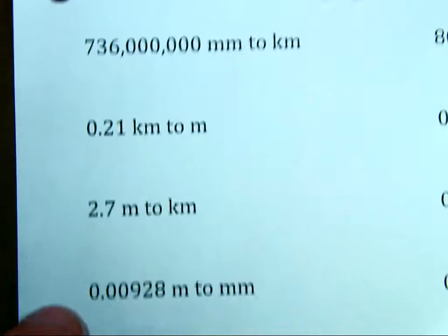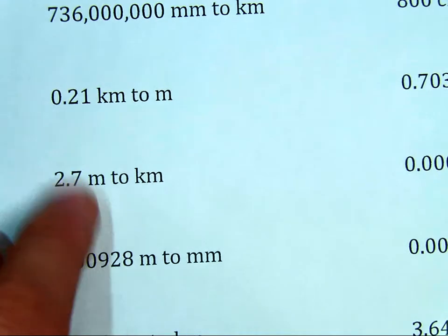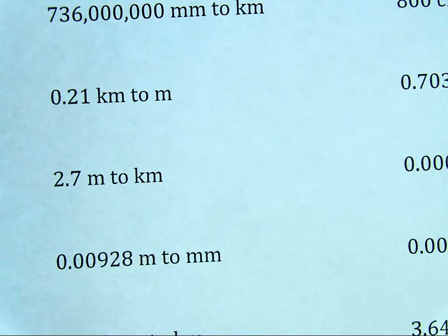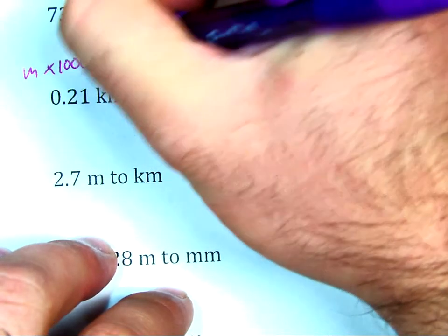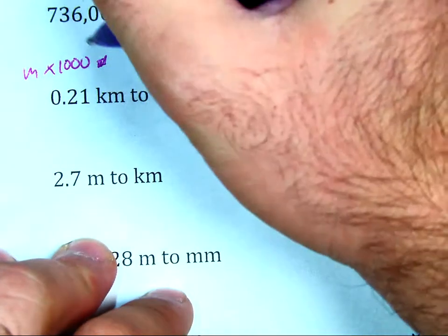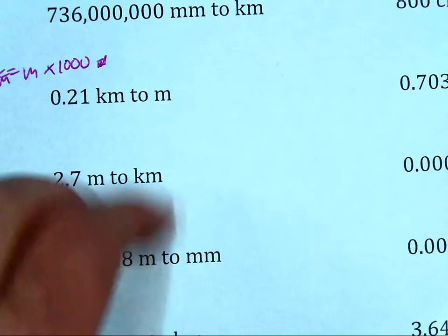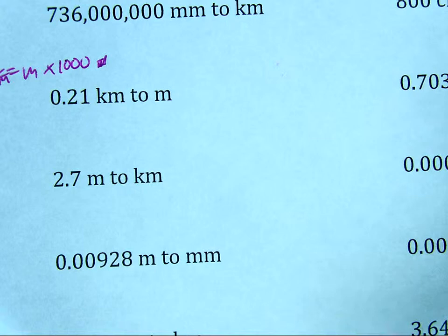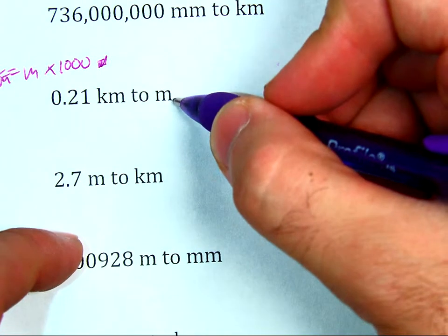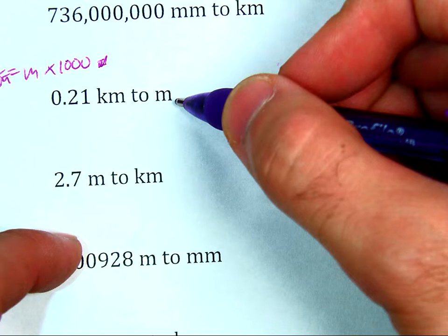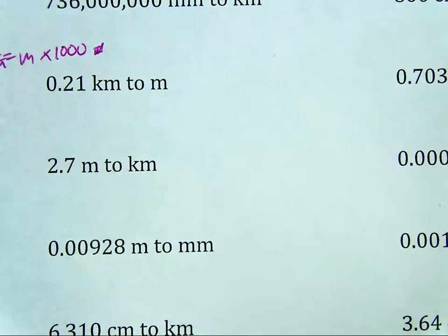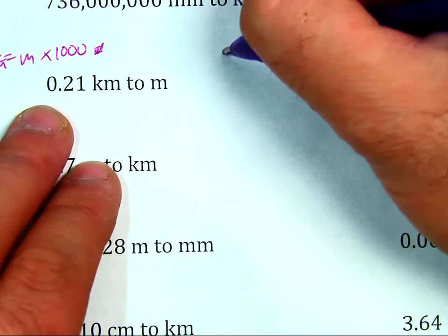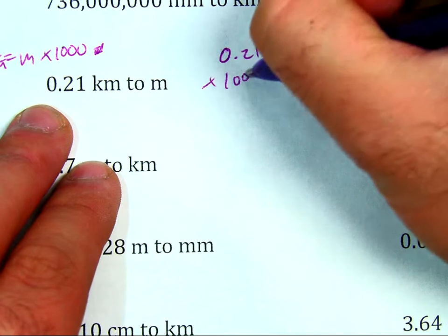What if I'm going bigger? I have 0.21 kilometers, and I'm going to convert it to meters. I know that I have meters times 1,000 is kilometers. So kilometer equals meter times 1,000. So I know I have 1,000 meters per kilometer. So to do this, I've got to figure this out. But I'm converting from kilometer to meter. I'm going to have more meters and fewer kilometers. So I have to expand. I have to multiply by 1,000. So I do 0.21 times 1,000.